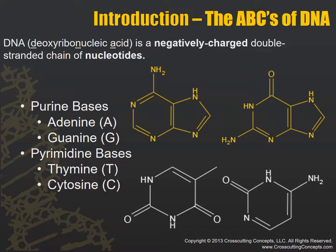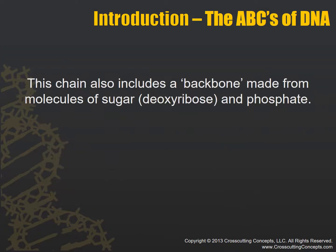Purine means double, pyrimidine means single. I used to remember this in college by thinking about purine as a shorter word, but it's a double ring. Pyrimidine is a longer word, but it's a shorter thing. Adenine, guanine, thymine, and cytosine — ATCG are our four bases.